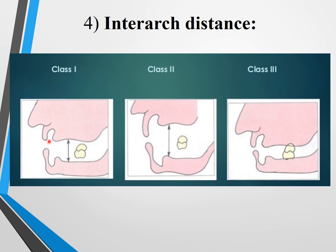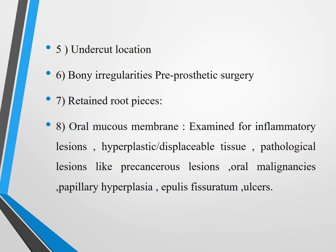Undercuts in prosthodontics are both friends and foes — sometimes preventing denture insertion, sometimes providing retention. Bony irregularities can be treated with pre-prosthetic surgery during mouth preparation, as bony spicules will hurt tissue under a denture. Retained root pieces are a complete contraindication — they create infection and must be extracted before proceeding.